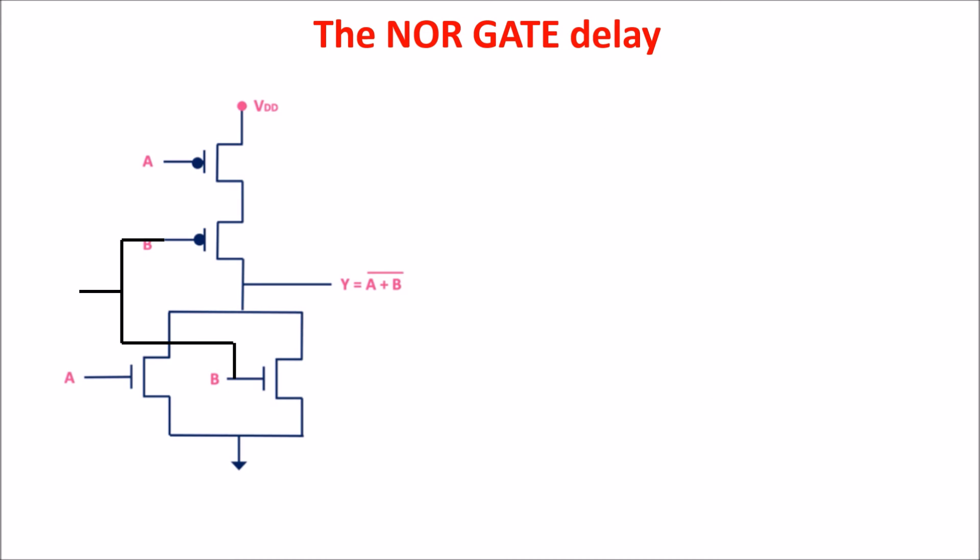Now, we see the NOR gate delay. We imagine to have a zero since long time, so we can compare this gate switching with an inverter switching. We want to balance the rise and fall time, so we need Wp 4 times Wn. This is because we have two PMOS in series to compare with a single N MOS. Remembering the PMOS resistance is the double of the N MOS resistance, we need the PMOS width 4 times that of the N MOS.